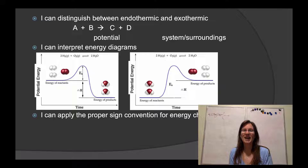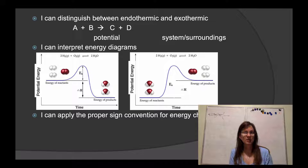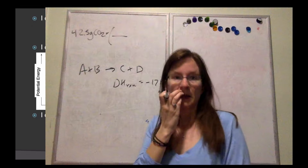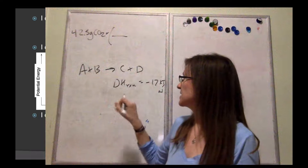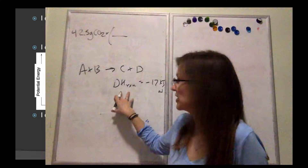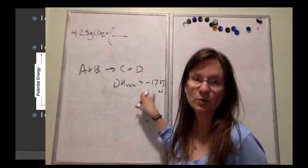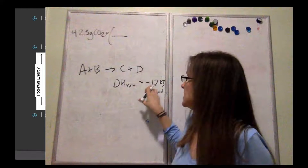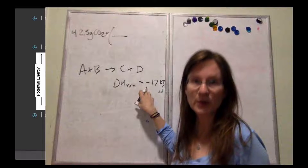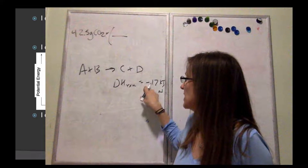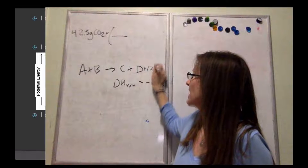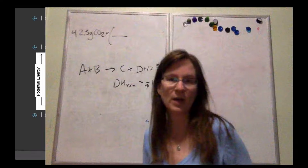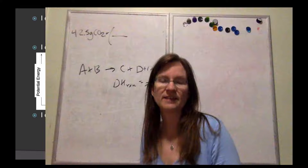The next learning target is: I can distinguish between endothermic and exothermic, and there are lots of different ways to determine that. One question about endo and exothermic would simply be where to place the energy within a thermochemical equation. In a scenario where I have A + B making C + D, if the heat of reaction is negative 17, I could ask you to rewrite this as a thermochemical equation — meaning a reaction including the heat. Since this is negative, this is an exothermic reaction, and exothermic heats are always added on the product side.